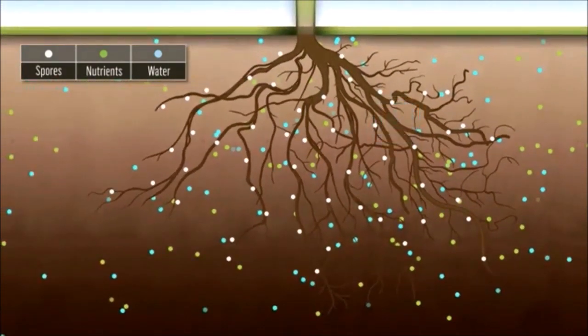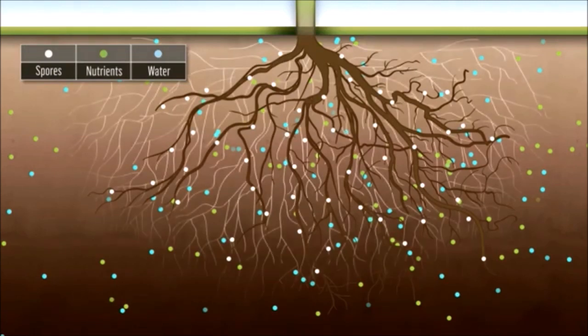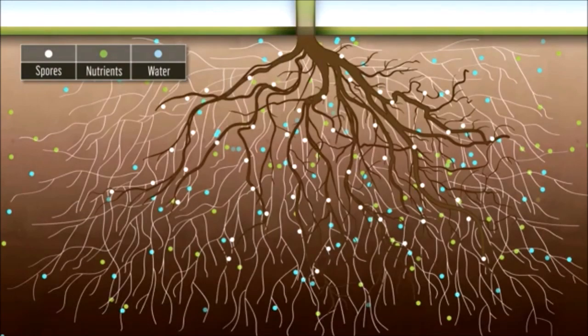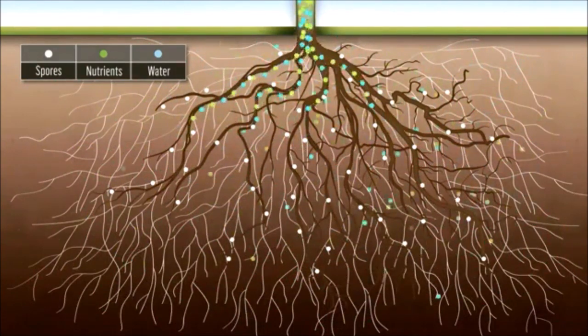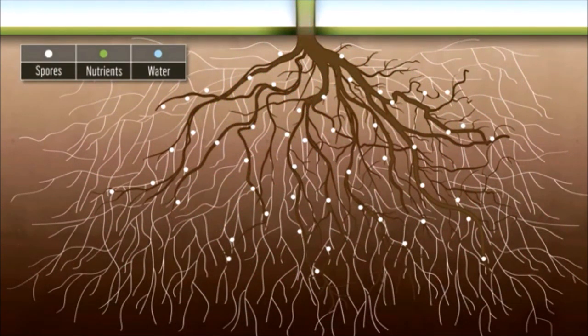Finally, the hyphae continues to develop outside the roots to explore the soil. Basically, mycorrhizae form a network of fine filaments that associate with the plant roots to draw nutrients and water from the soil that the root system would not be able to access otherwise.